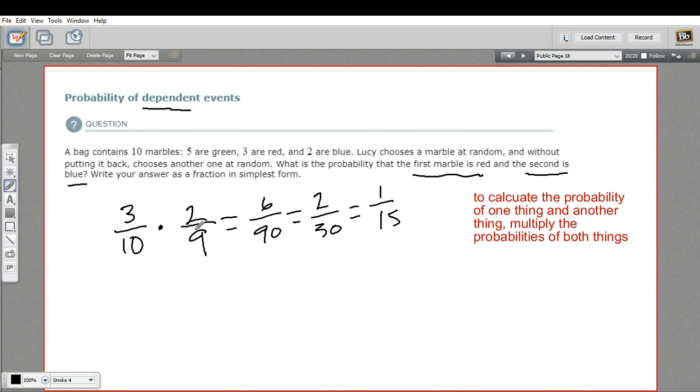You might have seen that nine is three times three, so we could have canceled there and made that a three. And we could have canceled this two here and made a five here. And then you'd get a one on top and a 15 on the bottom. That might be an easier way to do it if you want to cancel.